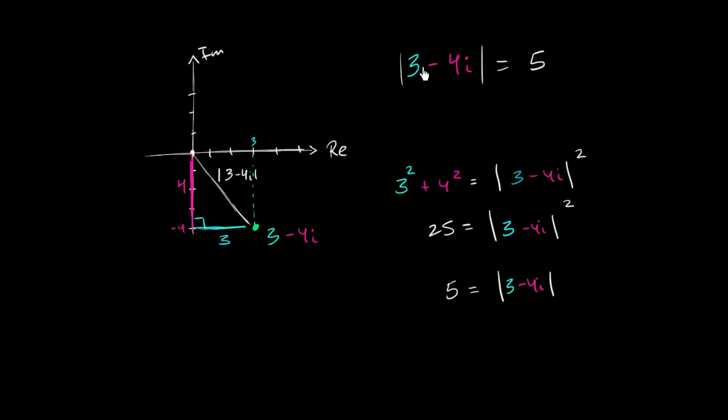one way you could think about this is: I have my real part and my imaginary part. I could take each of those parts, square them, take the sum, and take the square root. So another way of doing it, if you didn't want to visualize all of this, you could say this is just going to be equal to